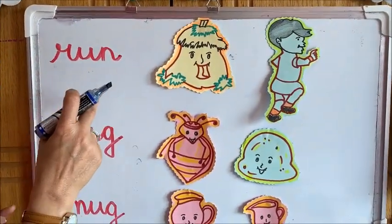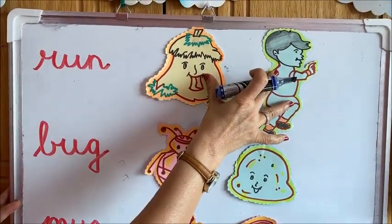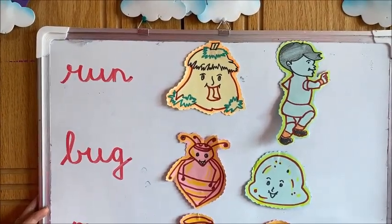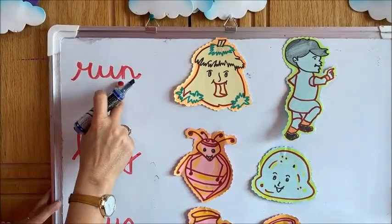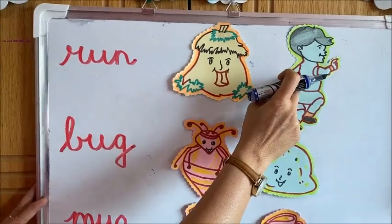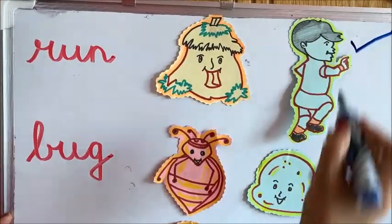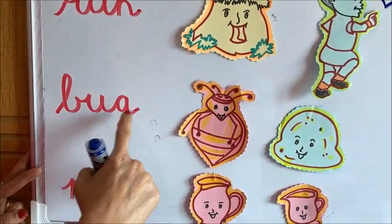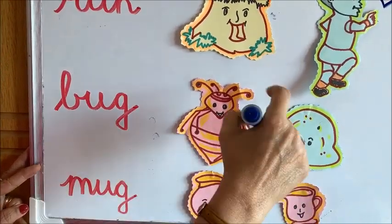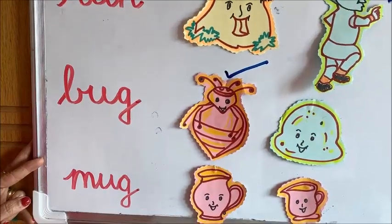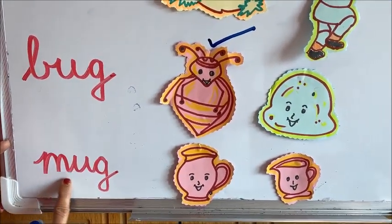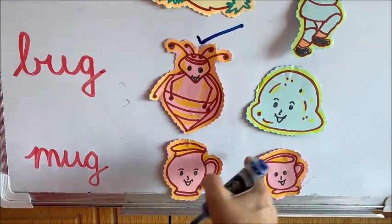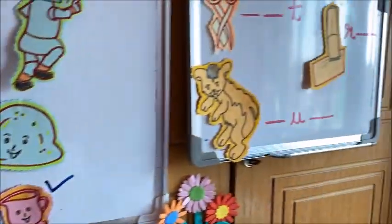Now here we have one word but two pictures, so you will not tick the word — you have to tick the picture. Which picture is correct? This is Run: so this is Hut and this is Run — you tick this picture. Now this is Bug — so where is Bug? This is Bug and this is Bun, so this one is the correct picture. Now this is Mug. Most of you make a mistake here — Mug is the smaller one, and this is Jug. So this is Jug and this is Mug.